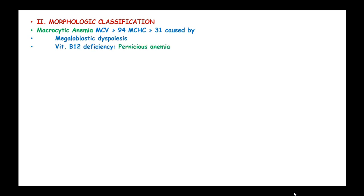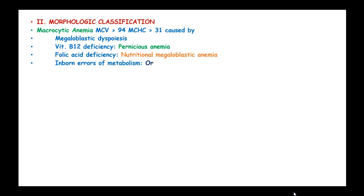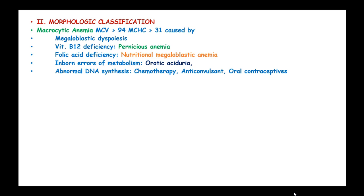Morphologic classification has three classes. Macrocytic anemia, where the MCV is more than 94 and mean cell hemoglobin concentration is more than 31. This can be caused by megaloblastic dyspoiesis, vitamin B12 deficiency leading to pernicious anemia, folic acid deficiency like in nutritional megaloblastic anemia, inborn errors of metabolism like in orotic aciduria, and abnormal DNA synthesis like in chemotherapy and anticonvulsant therapies.